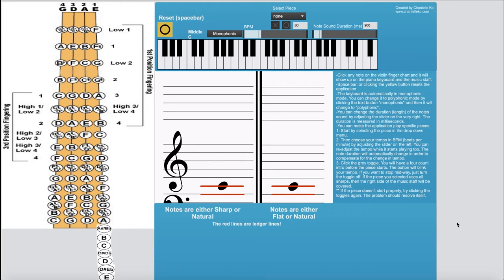In the old version of the violin finger chart tool you would click on any note on the piano keyboard and it would show up on the music staff. Well in this new version it is the opposite. You instead click on any note on the violin finger chart and it will show up on the piano keyboard and on the music staff.